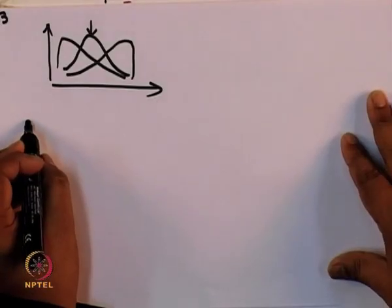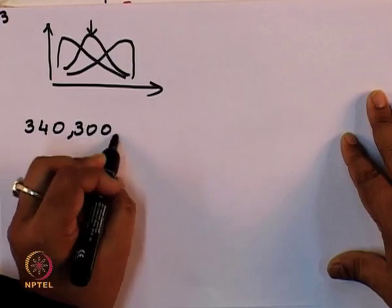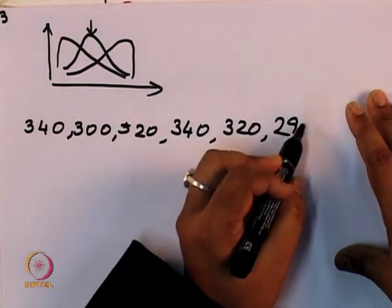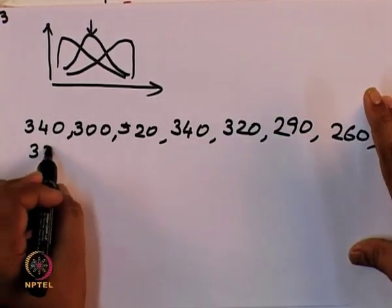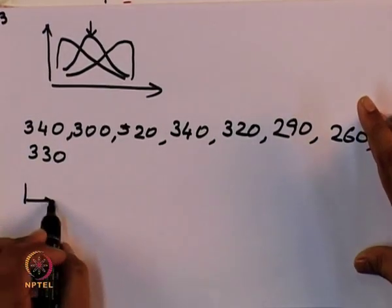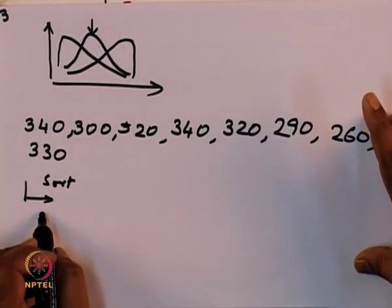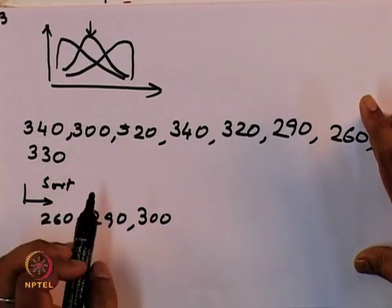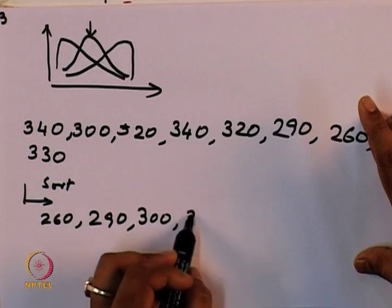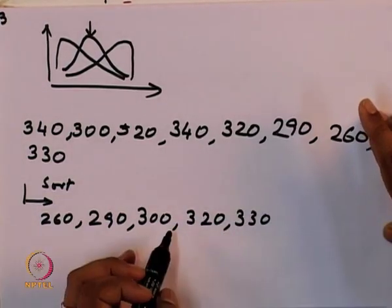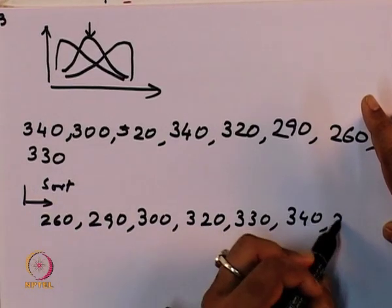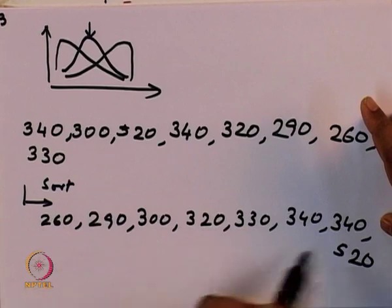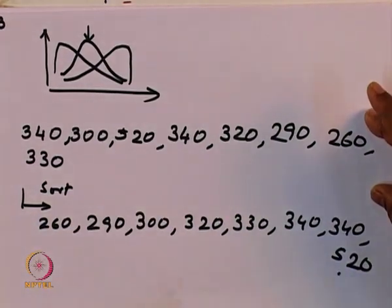The data points are: 350, 300, 520, 340, 320, 290, 260, and 330. The first step is to sort in ascending order: 260, 290, 300, 320, 320, 330, 340, 340, and 520. We can already see that as opposed to all the other points which are clustered together, the value 520 seems to be well outside the rest.